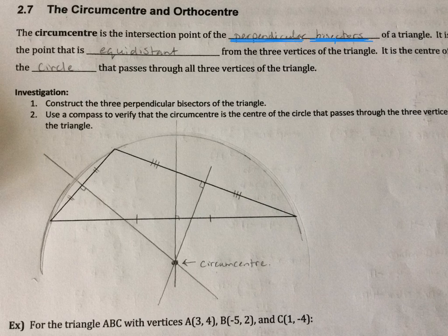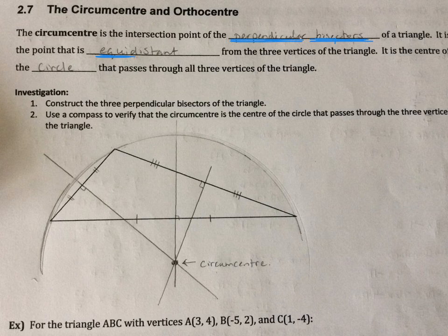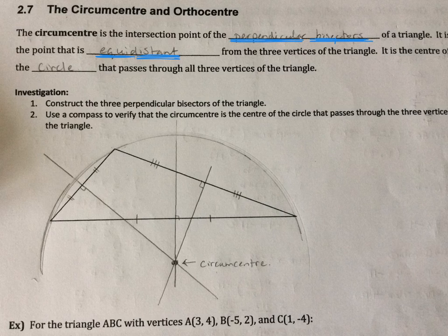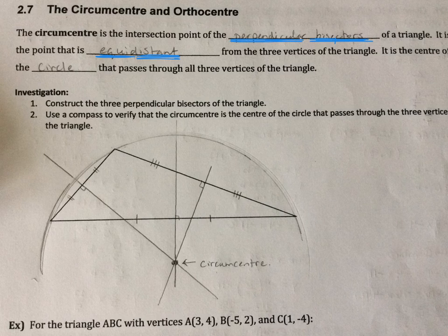Now, the intersection point of the perpendicular bisectors is a point that is equidistant—equal distance—from the three vertices of the triangle. It's the center of the circle that passes through all three vertices of the triangle.